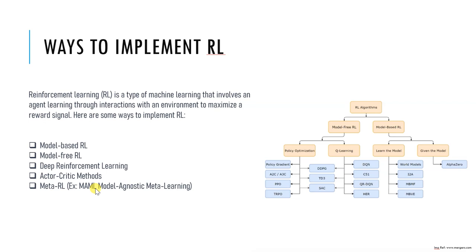An example is MAML, which stands for Model-Agnostic Meta-Learning. It is a Meta-RL method that trains an agent very quickly to learn new tasks with just a few samples.